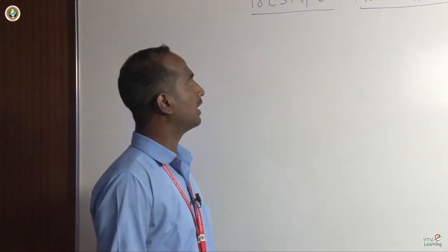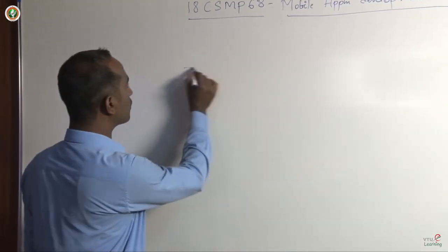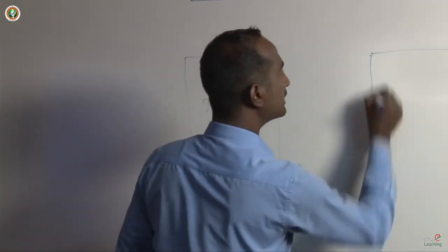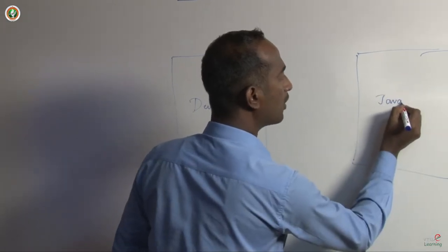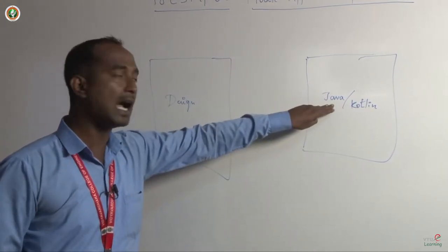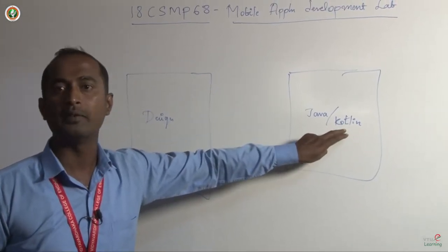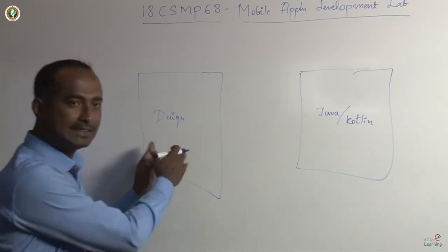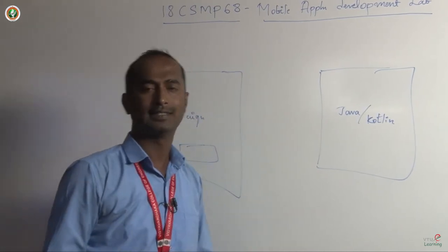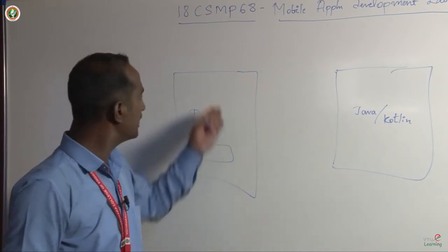As I mentioned in the previous video, whenever you create a project in Android Studio, it creates two things. One is the design file, and the other is a Java or Kotlin file based on the language you select. The design file is responsible for adding components required for your design, such as buttons, checkboxes, and edit text fields.